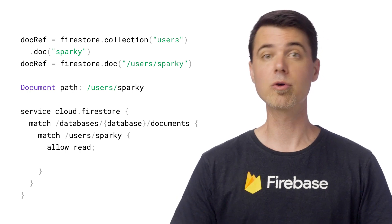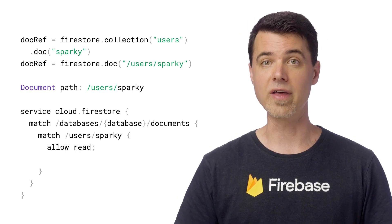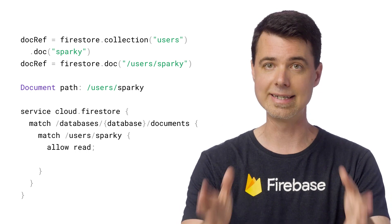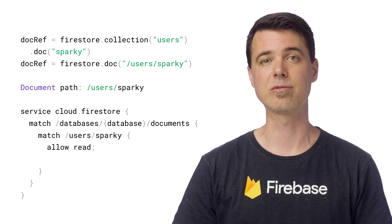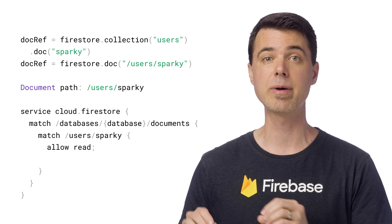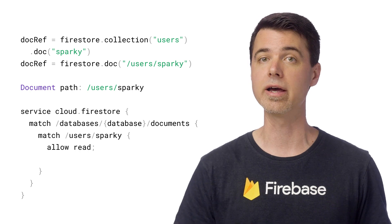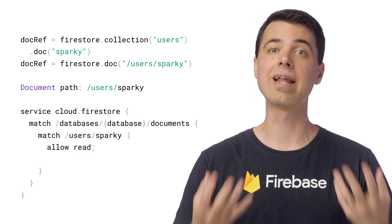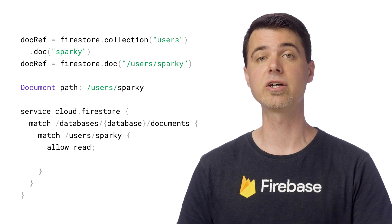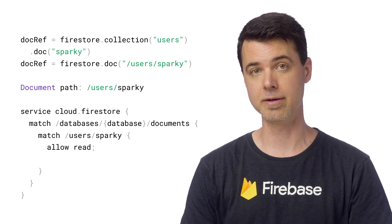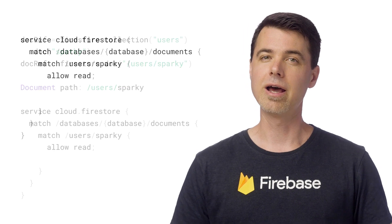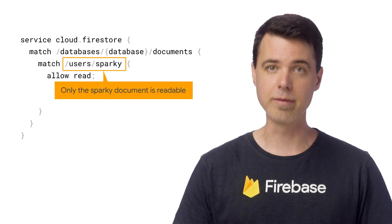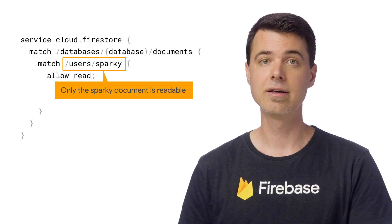It's super important to note here that all documents in the database are, by default, denied access by security rules when accessed from a mobile or web client. What security rules let you do is selectively allow access to documents based on the criteria you define. Now, I find it unlikely that anyone would need to write a rule for one particular user's document like this.